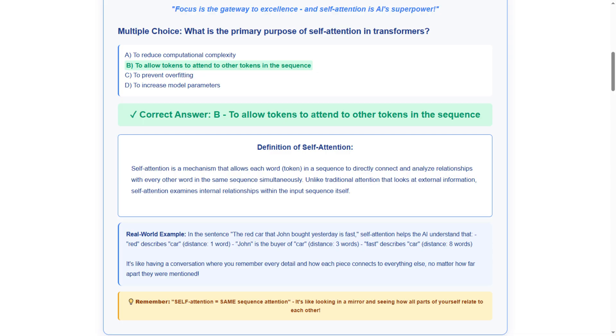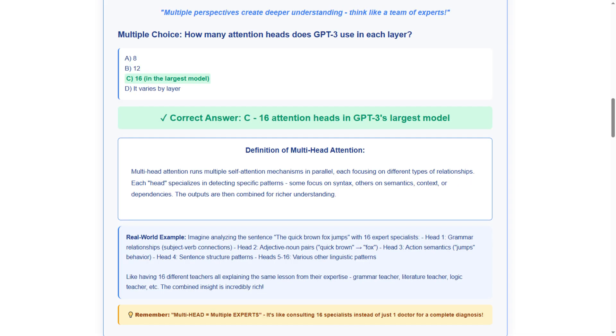Remember, mirror reflection relationships. Our next question focuses on multi-head attention architecture. How many attention heads does GPT-3 use in each layer?